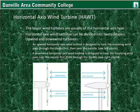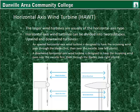The larger wind turbines are usually of the Horizontal Axis design. Horizontal Axis Wind Turbines can be divided into two subtypes: Upwind and Downwind turbines. An Upwind Horizontal Axis Wind Turbine is designed to have the incoming wind pass through the blades first, then over the nacelle, as seen in the photo at the left. A Downwind Horizontal Axis Wind Turbine is designed to have the incoming wind pass over the nacelle first, then over the blades.